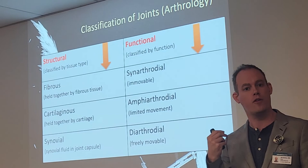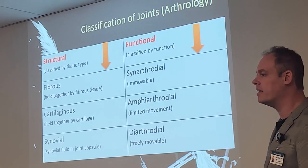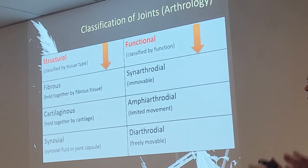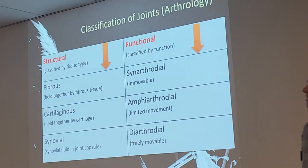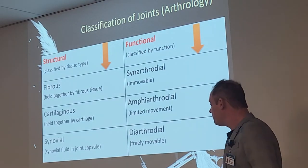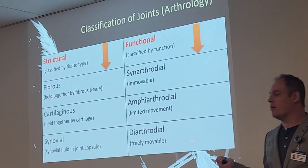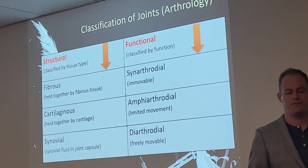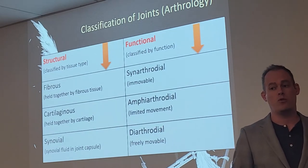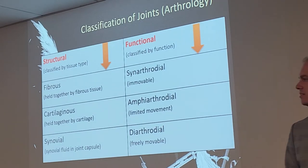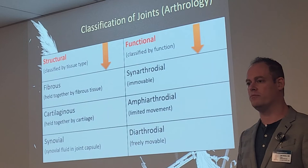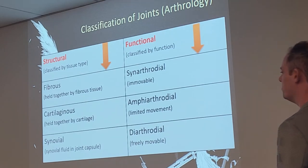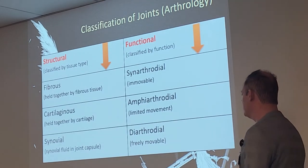We need to make sure these terms are fresh in our minds or we're going to get lost — there are a lot of joints in the body. Diarthrodial is probably the most common we'll see throughout the body, otherwise we wouldn't be able to move around, talk, chew, move our fingers, feet, or toes.